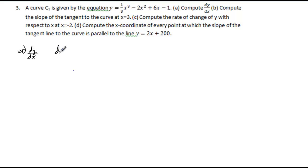Finding dy/dx, take the derivative of one-third x cubed—bring down the 3. One-third times 3 gives you 1, so we have x squared minus 4x plus 6. The derivative of negative 1 is 0, so that goes away. Our derivative is x squared minus 4x plus 6.